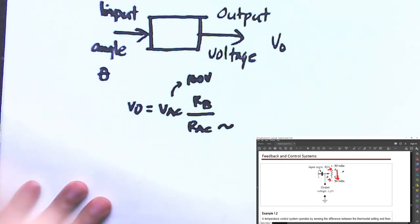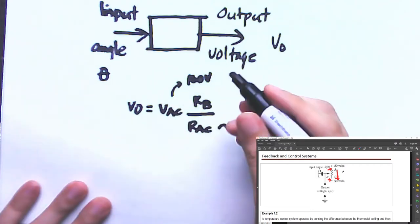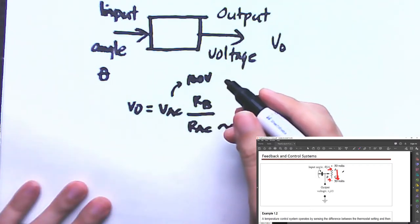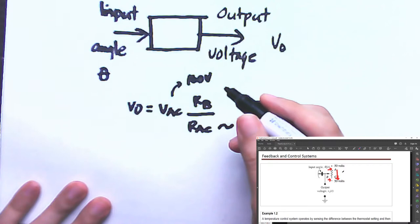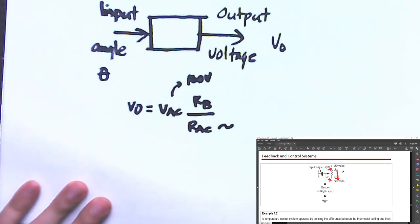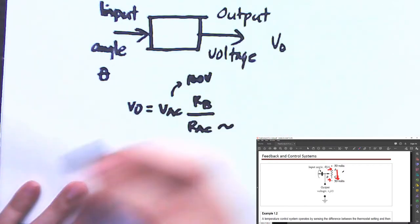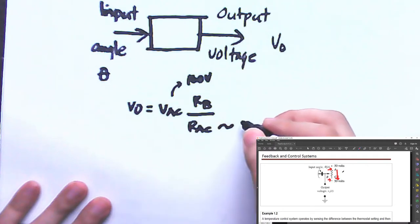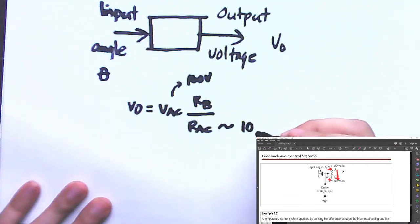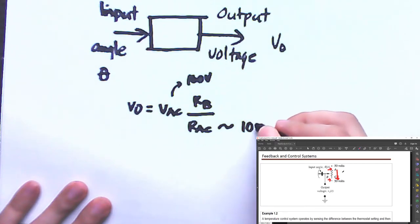But since the input is angle and you need 10 turns to go from point A to point C, we multiply that by 2π. Each turn is 2π, so 10 turns is 10 times 2π.